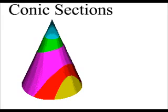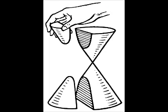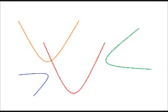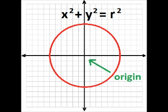These are the most common conic sections: circles, ellipses, hyperbolas, parabolas. Circles are easy. x squared plus y squared is equal to the radius squared if the center's at the origin.